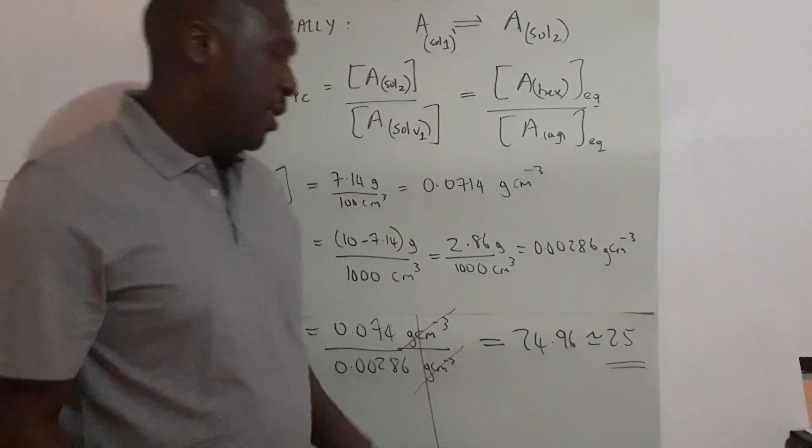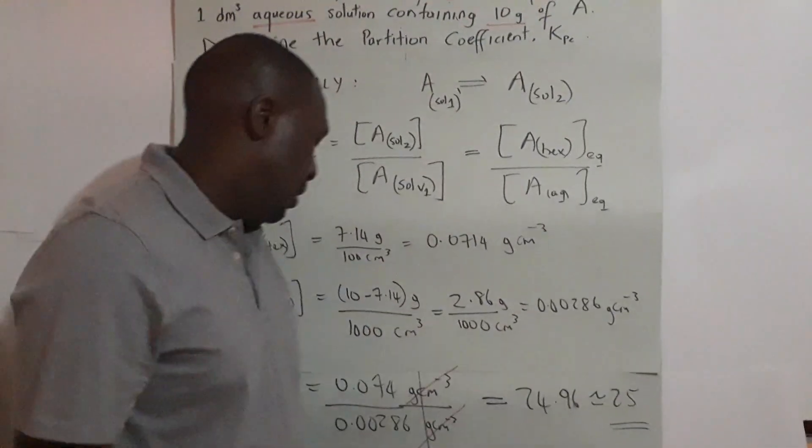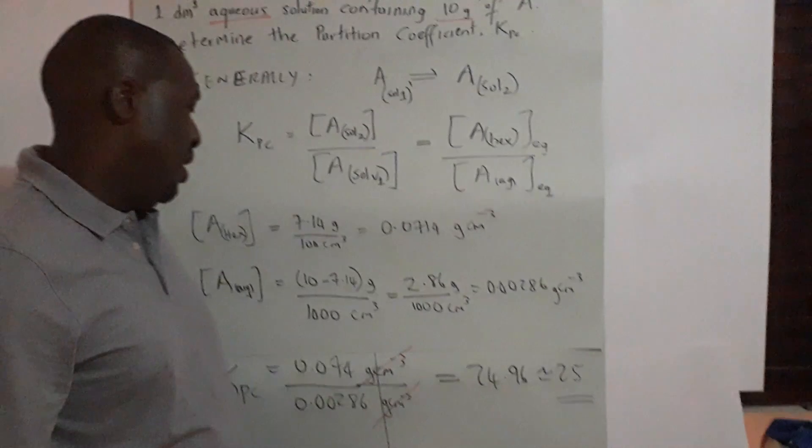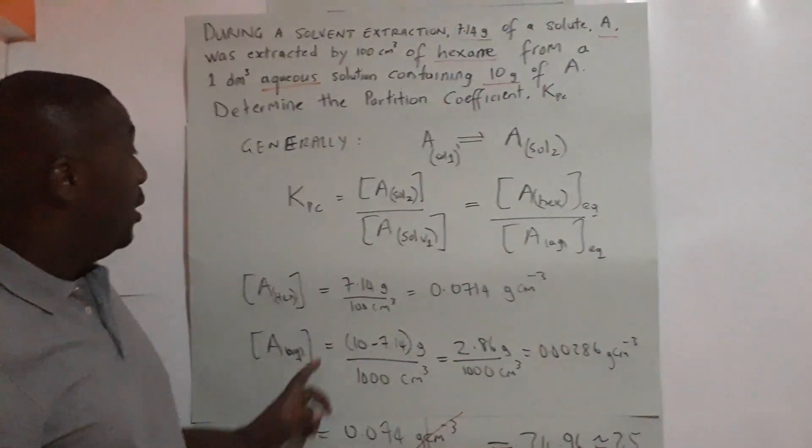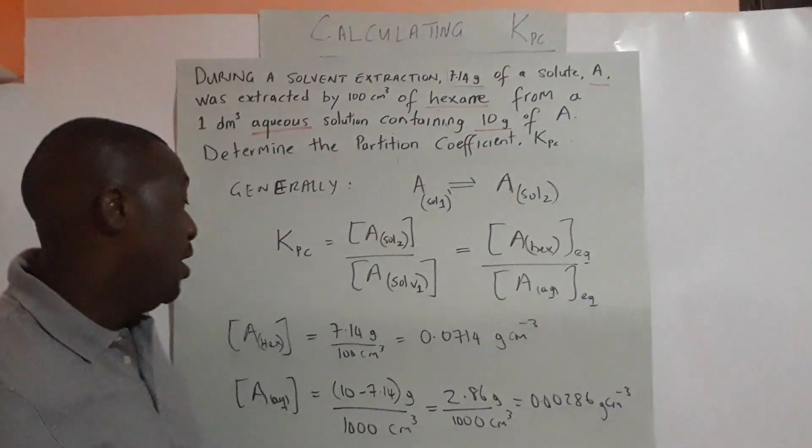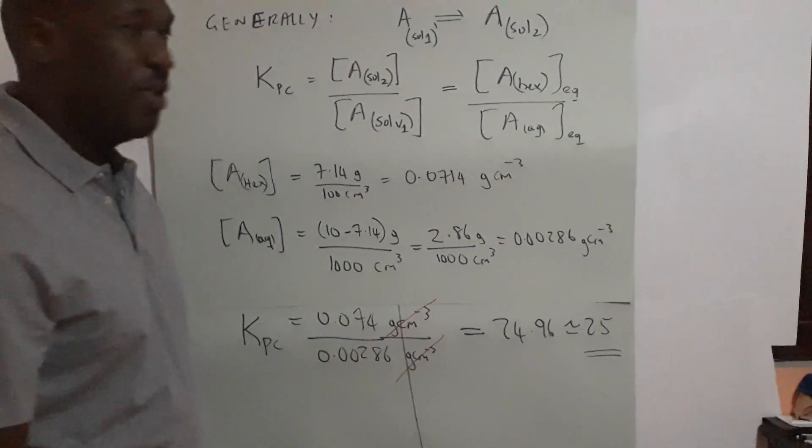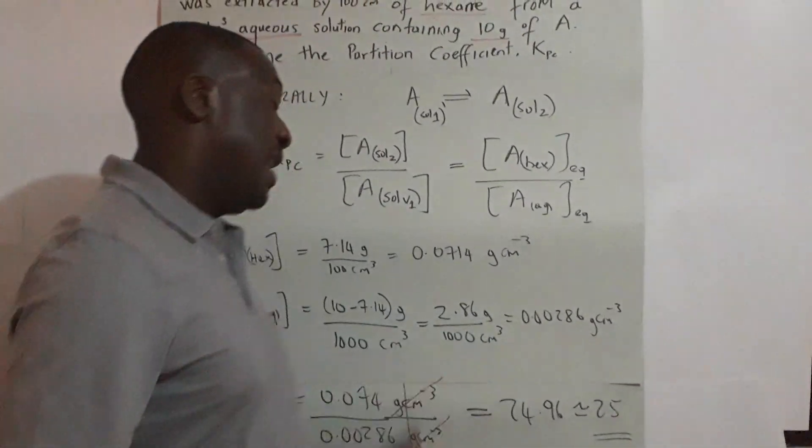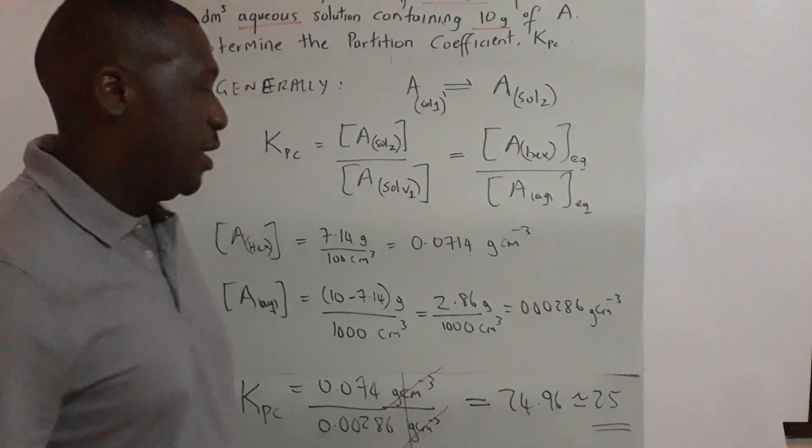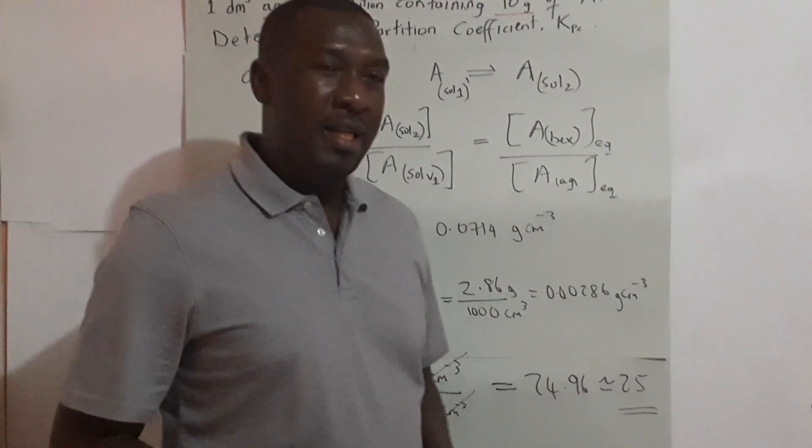So there you have it. What this effectively means is that compound A is 25 times more soluble in hexane than in water. And that's how you calculate KPC.